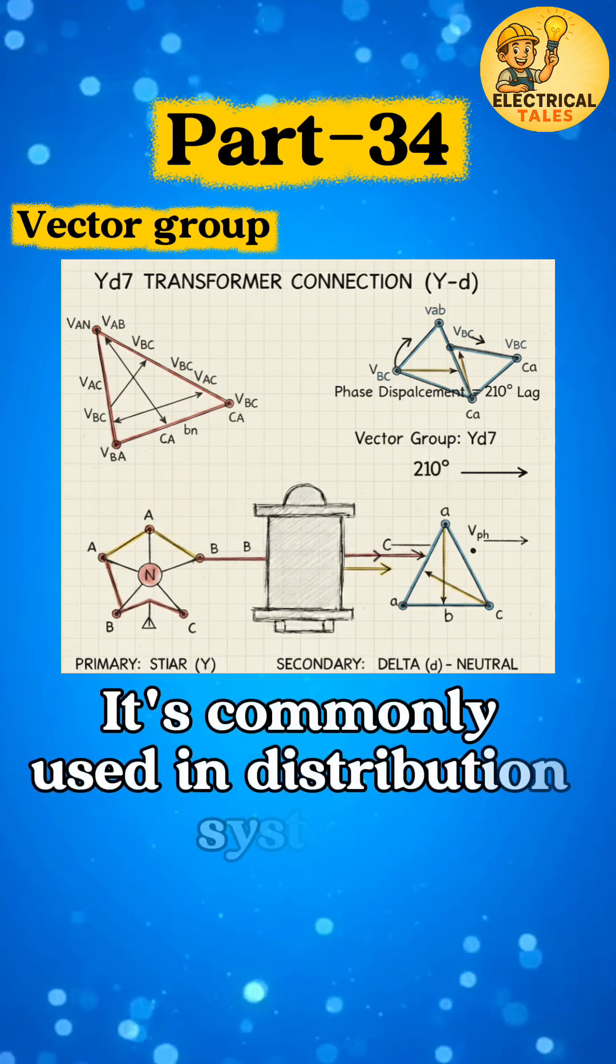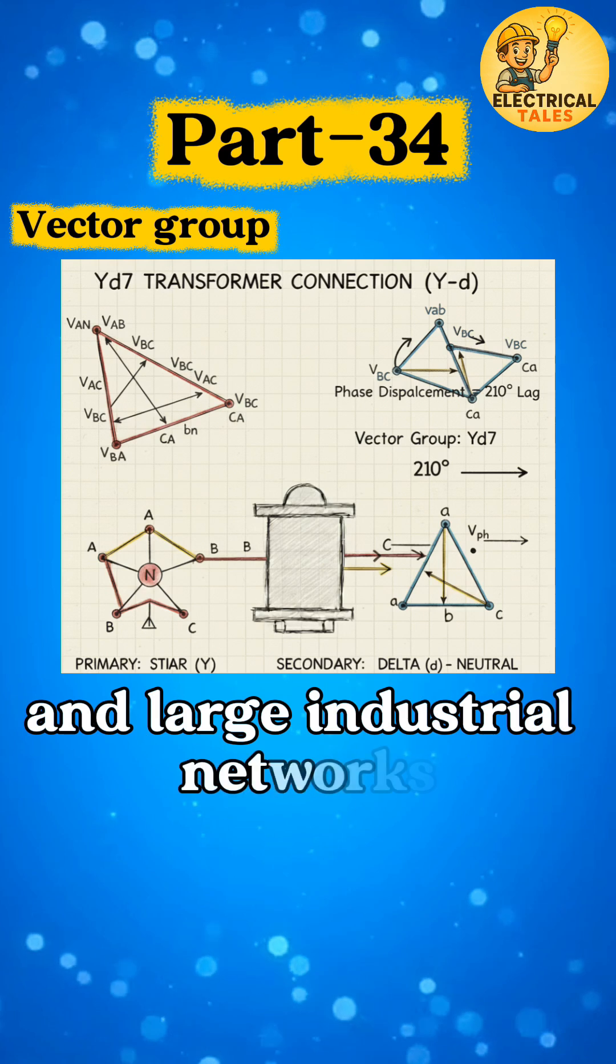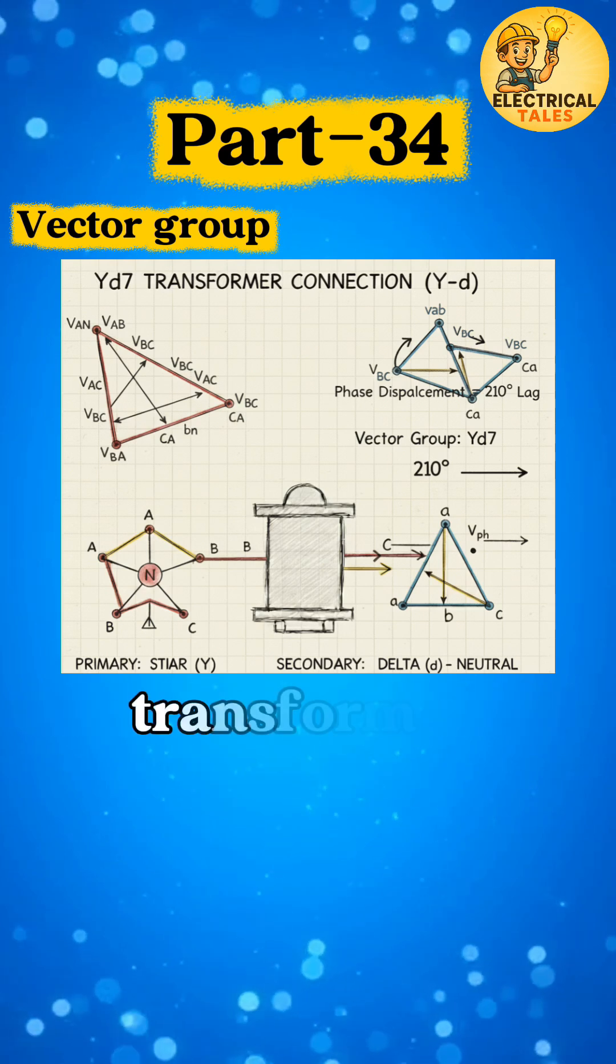It's commonly used in distribution systems and large industrial networks where load sharing between transformers is critical.